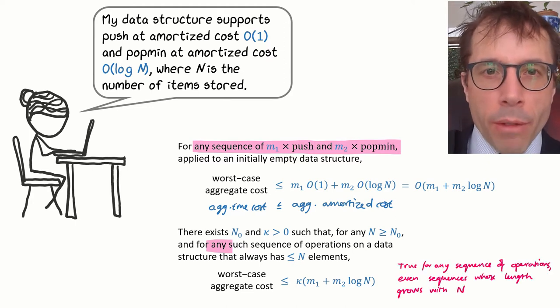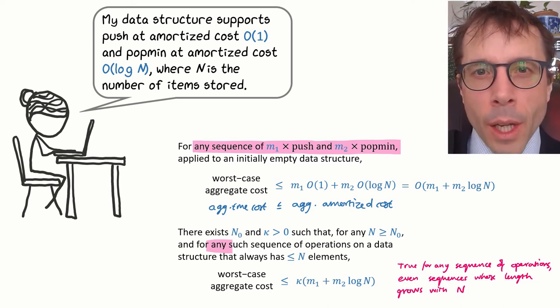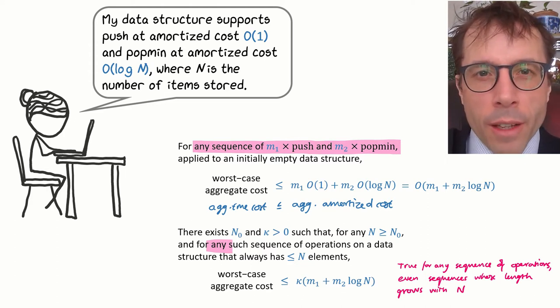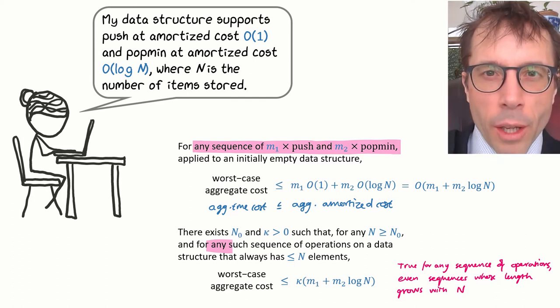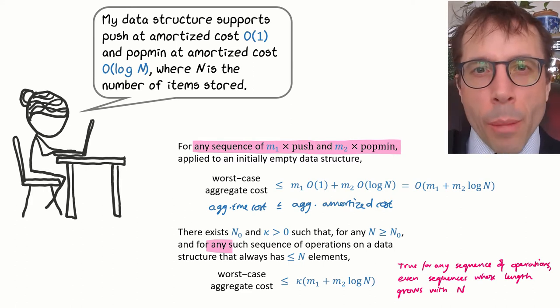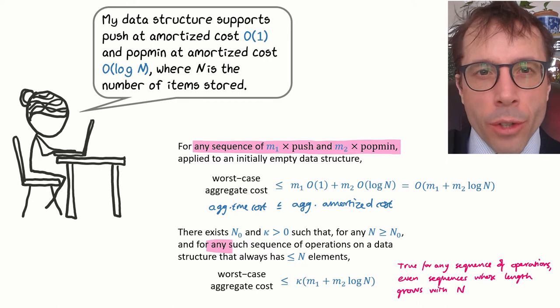It has to apply if m1 and m2 are constants. It has to apply if m1 and m2 are functions of N. It might be m1 is log N, m2 is N squared. It could be anything at all. I just want to be absolutely explicit about this here, because even though we don't usually have to think about this precise definition, usually when you have to remember the catchphrase: aggregate true cost is less than or equal to aggregate amortized cost.